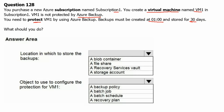First question: the location in which to store the backups. Blob container is a type of cloud storage for unstructured data, so that is not for backup purposes. File share is a Microsoft easy-to-use cloud file system — that is also not for keeping backups. A recovery service vault is an entity that stores the backup and recovery points created over time, so this is the correct answer. A storage account is a Microsoft cloud storage solution for data storage, not for backup. Therefore, the location for keeping the backup is a recovery service vault.